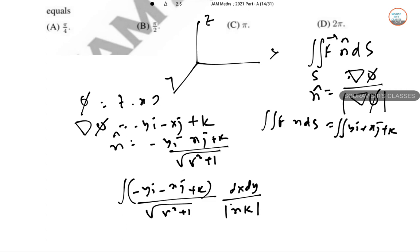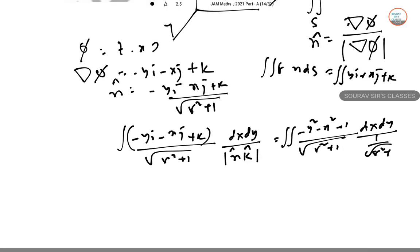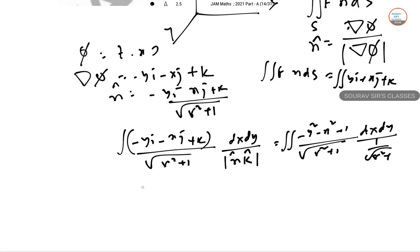Dot product with minus Y I minus X J plus K over root over R square plus 1, dX dY. N dot K gives double integration minus Y square minus X square plus 1, root over R square plus 1, dX dY. That's 1 by root over R square plus 1. Now N is minus R square plus 1, dX and dY.